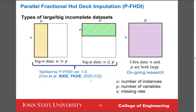We define two types of large data: big-N data, which has millions of instances or rows but only dozens or hundreds of variables; and big-P data, which has ten thousand or millions of variables but fewer instances. Our ongoing research is working on what we call 'ultra' data, which is concurrently big-N and big-P — both millions of instances and millions of variables.